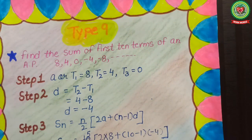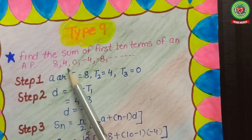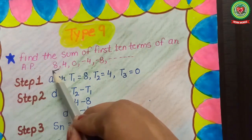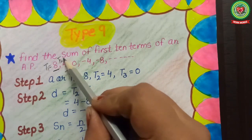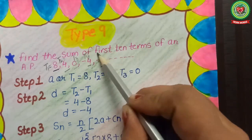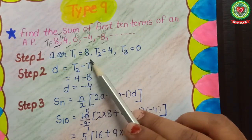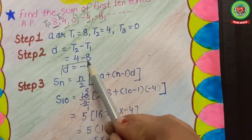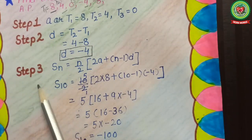First sum: find the sum of the first 10 terms of an AP where the series is 8, 4, 0, −4, −8, and so on. Here 8 is our first term, 4 is the second term, 0 is the third term, −4 is t4, and −8 is t5. Step 1: write the given terms. Step 2: find the common difference by using t2 and t1, which gives us a common difference of −4.